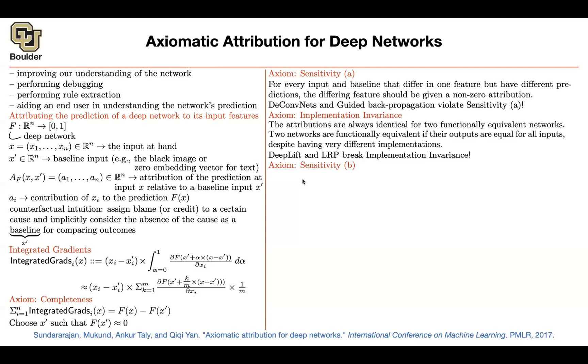Not only that, it's going to satisfy some other nice axioms like sensitivity version B. The idea is that if your neural network does not depend on some variable, maybe some pixels are not important. Your prediction is not going to depend on them. Then the corresponding attribution to that variable should be zero. And integrated gradient is going to satisfy that axiom.